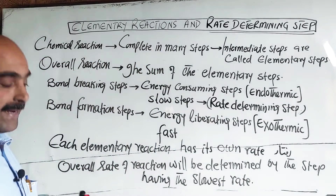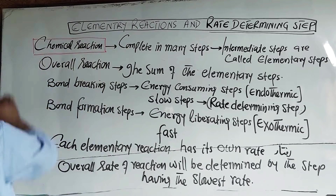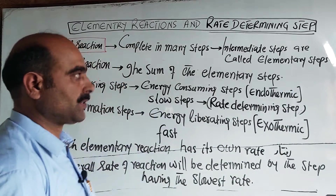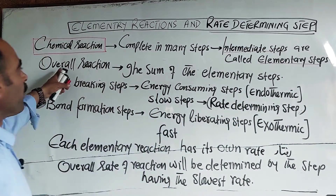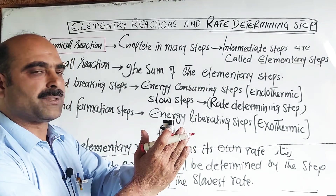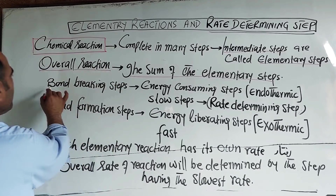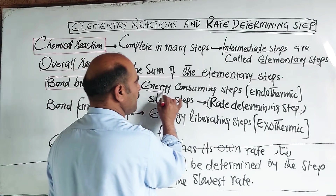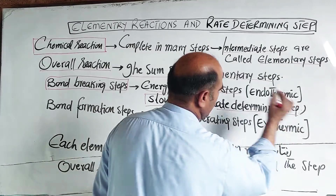In simple words: a chemical reaction completes in many steps, and these many steps or reactions are called intermediate reactions or elementary steps. The overall reaction is the sum of all these elementary or intermediary reactions. Among these intermediate reactions, bond breaking steps are energy-consuming, endothermic, and slow steps.